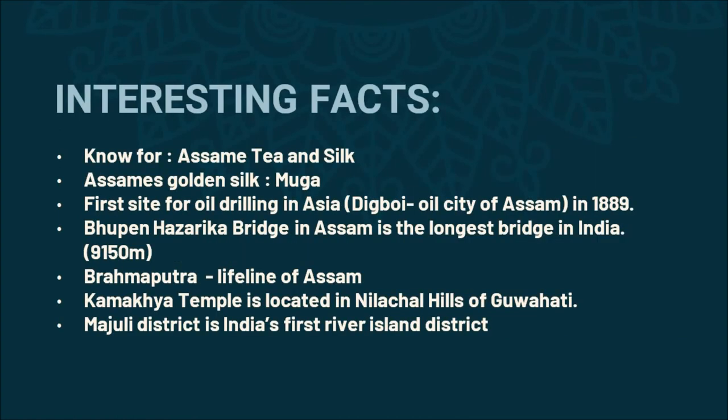Here are some interesting facts about Assam. Assam is famous for its tea and silk. The famous Assamese golden silk is known as Muga. In 1889, Digboi became the first site for oil drilling in Asia — that's why Digboi is known as the oil city of Assam. The Bhupen Hazarika Bridge in Assam is the longest bridge in India, with a length of 9,150 meters.